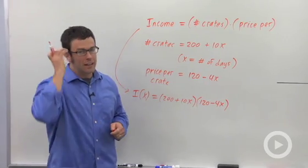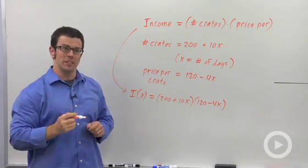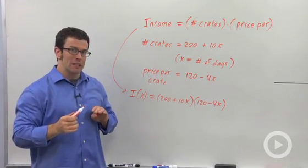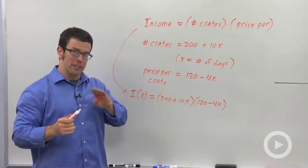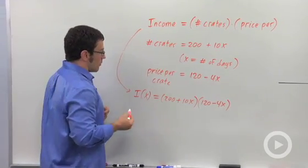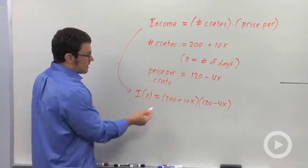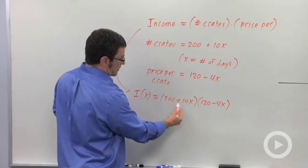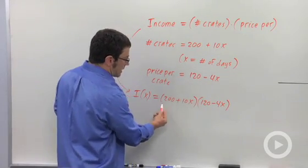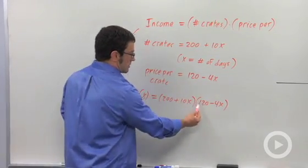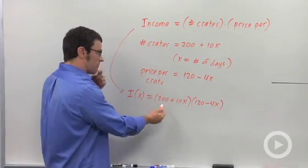This is a quadratic function. The great thing about quadratic functions is we know exactly where the maximum occurs—at the vertex. Looking at this equation, I can tell where the x-intercepts are, so I'm going to graph this function.